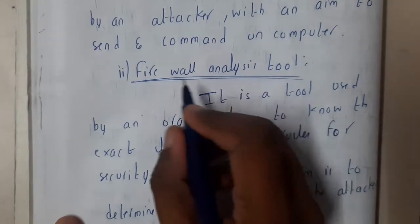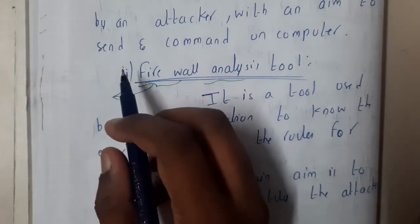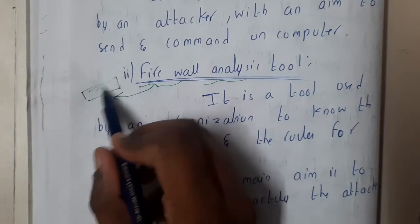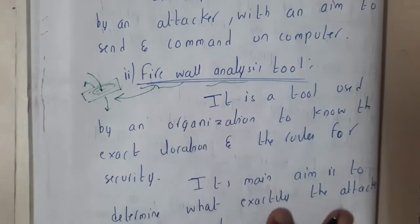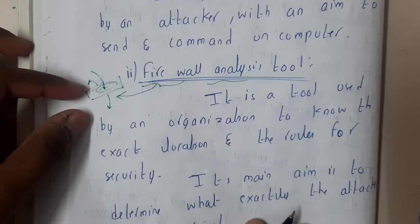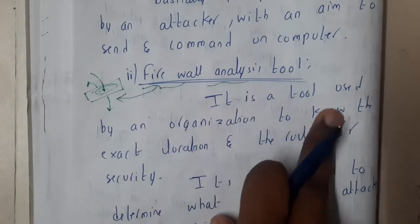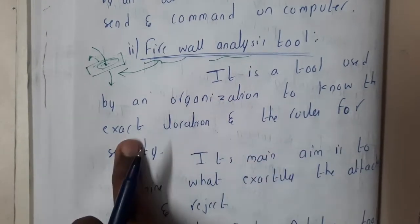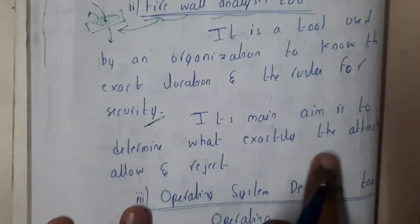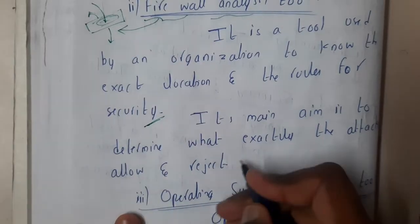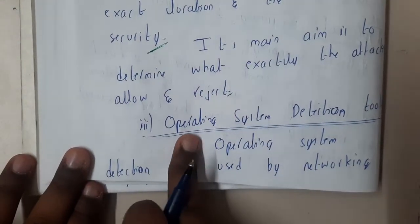The second tool is the firewall analysis tool. A firewall has a set of rules — traffic that passes the rules is allowed inside, and traffic that does not is rejected. If an attacker knows these rules, they can satisfy them easily. The firewall analysis tool is used by an organization to know the exact location and rules of the security system. Its main aim is to determine what the firewall allows and rejects.